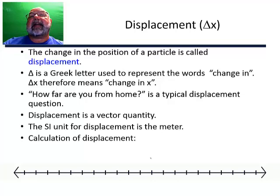Displacement is a vector quantity, means it has both magnitude or an amount, and a direction. And again, for one-dimensional motion, we are going to use positive and negative. Again, the unit for displacement, the SI unit is the meter.